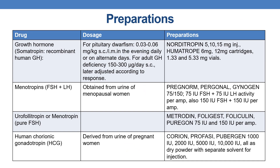Now let us see some of the marketed preparations. The first is growth hormone, which is somatotrophin — recombinant human growth hormone. For pituitary dwarfism: 0.03 to 0.06 mg per kg subcutaneous or intramuscular in the evening, daily or on alternative days. For adult growth hormone deficiency: 150 to 300 mcg per day subcutaneous, later adjusted according to response. Preparations: Norditropin 5, 10, and 15 mg per injection; Humatrope available in 6 mg and 12 mg cartridges and also 1.33 and 5.33 mg vials.